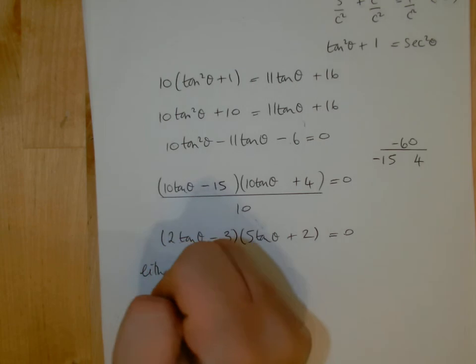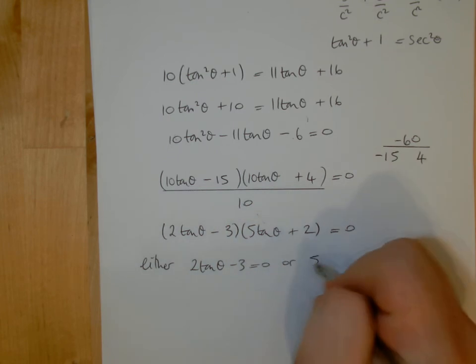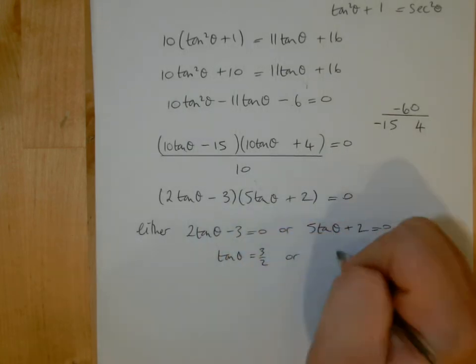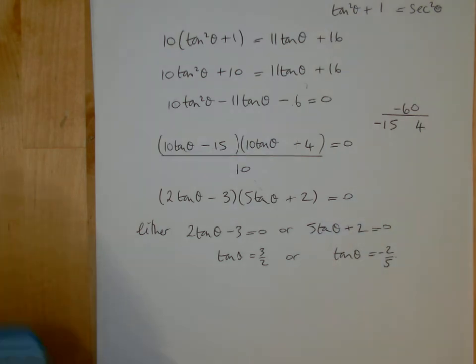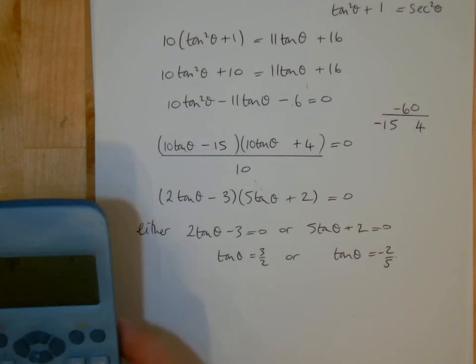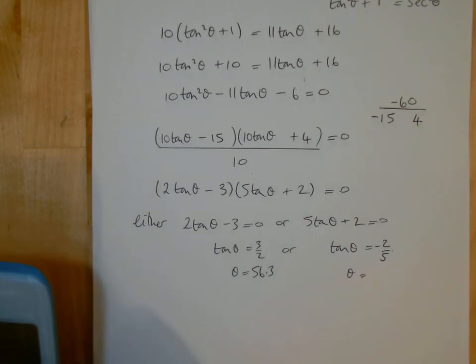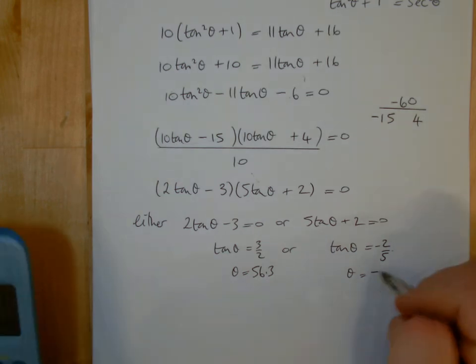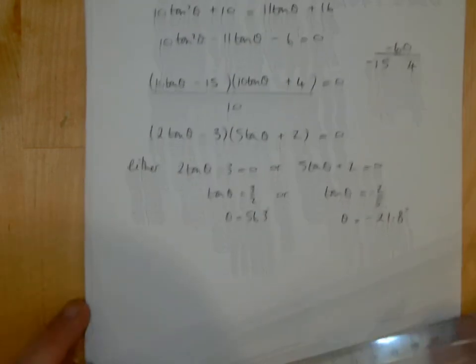Then you say, either 2tan θ - 3 = 0 or 5tan θ + 2 = 0. So tan θ = 3/2 or tan θ = -2/5. On your calculator, make sure you have it in degree mode. Inverse tan of 3/2, I get θ to be 56.3°, and for -2/5, I get -21.8°. Remember, we need a full set of results between 0 and 360.